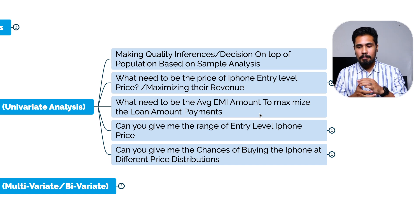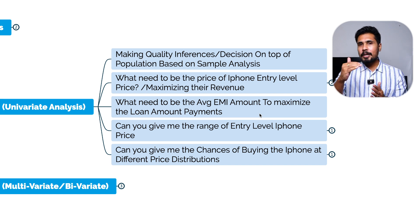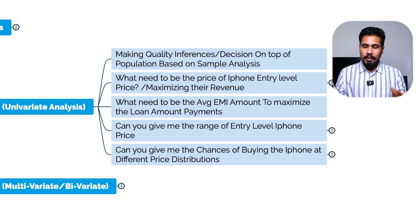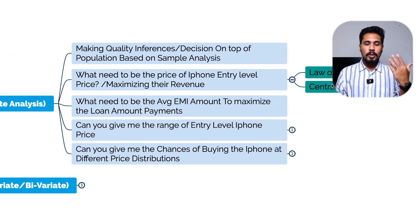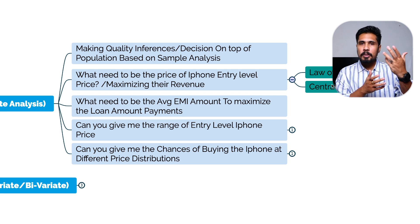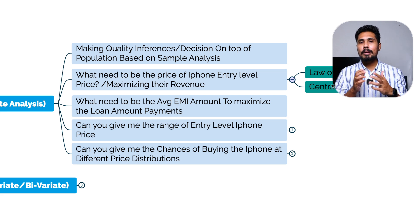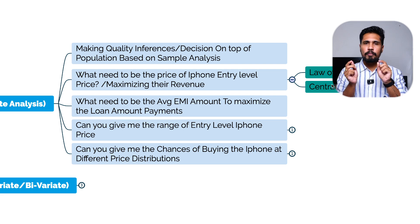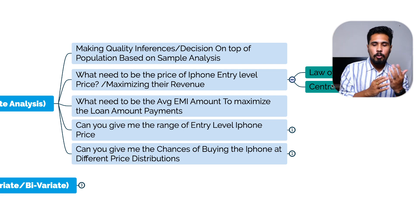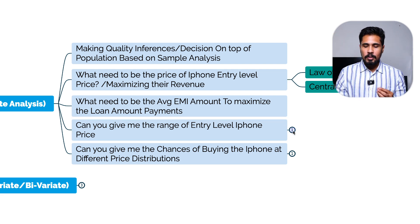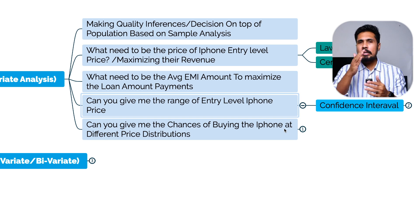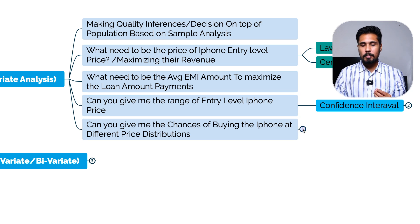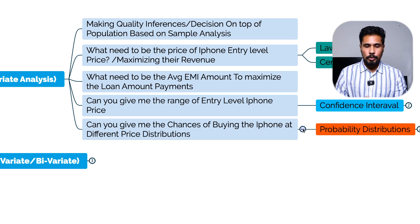For inferential statistics, for example, if I want to determine the entry-level price of an iPhone to maximize revenue, I'll use concepts like the law of large numbers or the central limit theorem. If I want to find the range — lower and upper bounds — of a loan payment, I'll use confidence intervals. If I want to understand the probability of buying an iPhone at different price points, I'll use probability distributions.